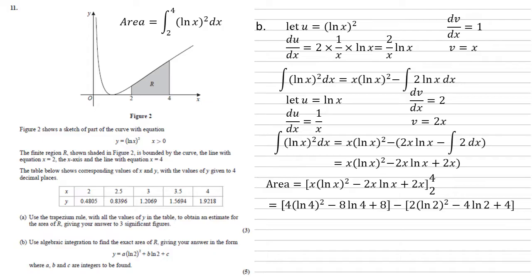So substituting the 4 in, we get 4 ln 4 squared minus 8 ln 4 plus 8, and putting the 2 into the second bracket, we get 2 ln 2 squared minus 4 ln 2 plus 4.